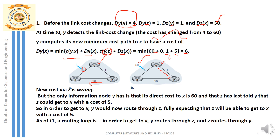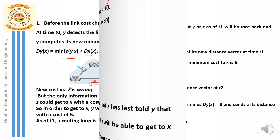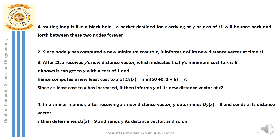This wrong information continuously gets circulated — this is the count to infinity problem. The solution is for node z to say a lie that infinity is the distance to reach from z to node x. In that case, node y will never take the path via node z to reach destination x. This concept can be called a black hole, because between y and z the back-and-forth forwarding of packets takes place unnecessarily, going forever.